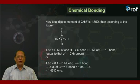Or, 1.85 is equal to 0.4 plus dipole moment of CF bond. Therefore, dipole moment of CF bond will be equal to 1.85 minus 0.4 and that amounts to 1.45 Debye, that's the answer.